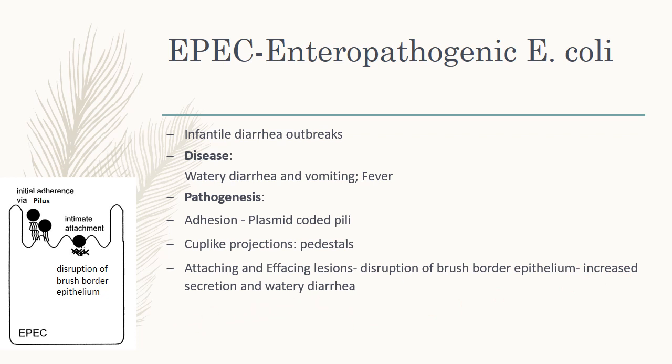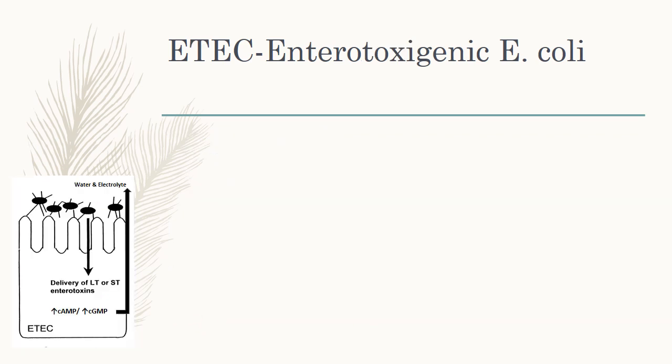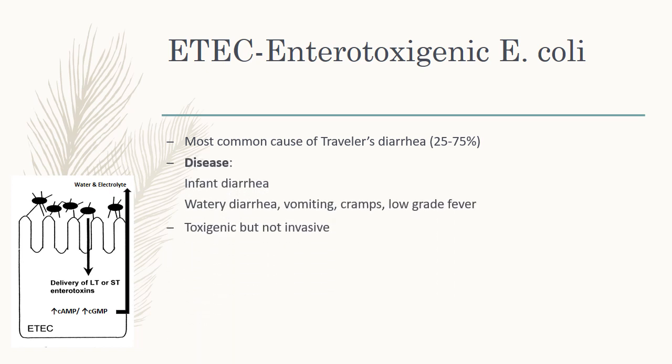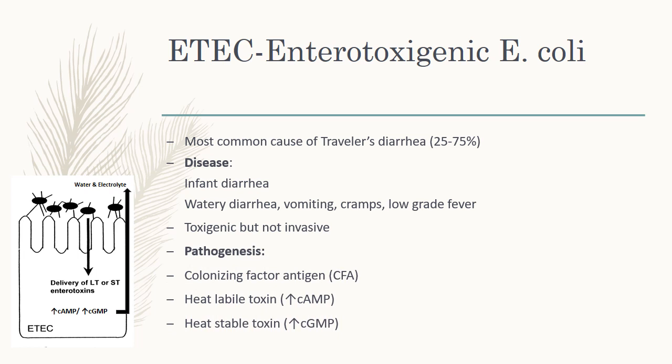The next one is ETEC, that is enterotoxigenic E. coli. ETEC is the most common cause of traveler's diarrhea, causing 25 to 75 percent of cases. The disease produces acute watery diarrhea, vomiting, cramping, and low-grade fever in both infants and adults. It is toxigenic but not invasive.